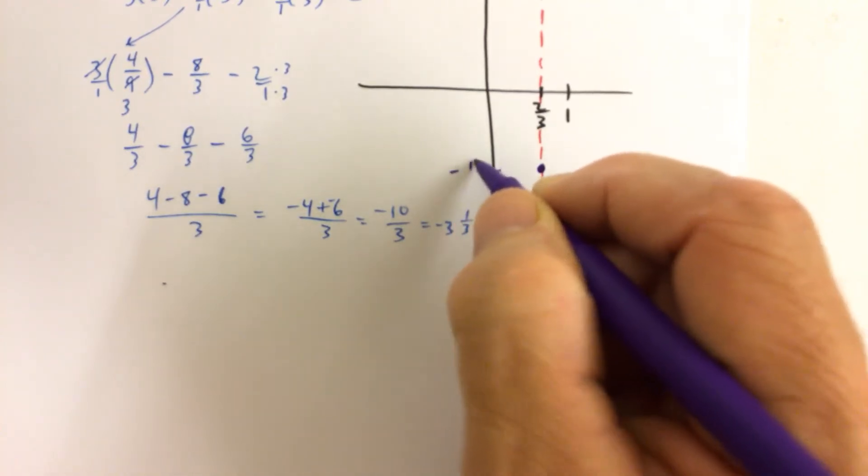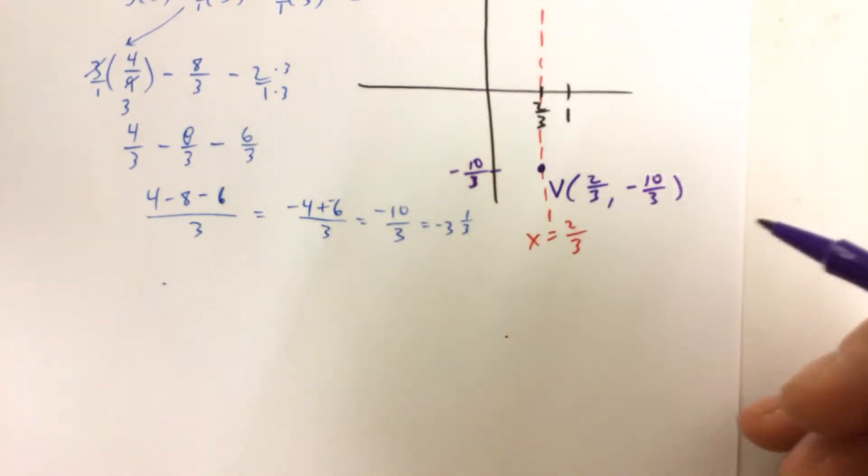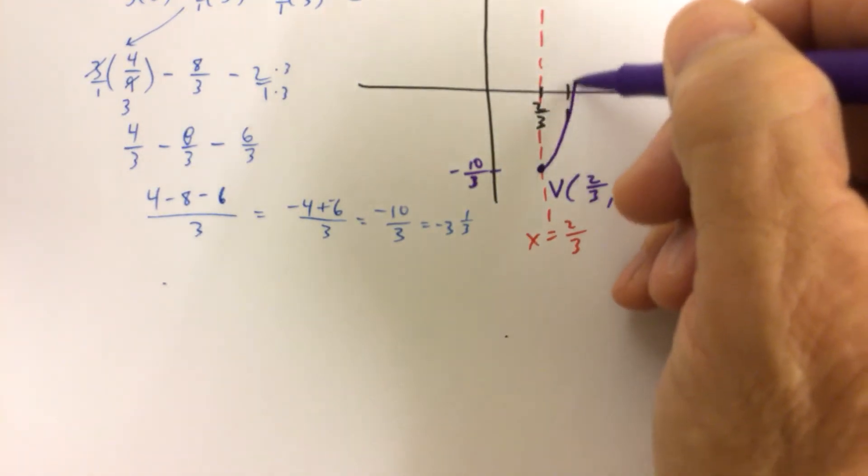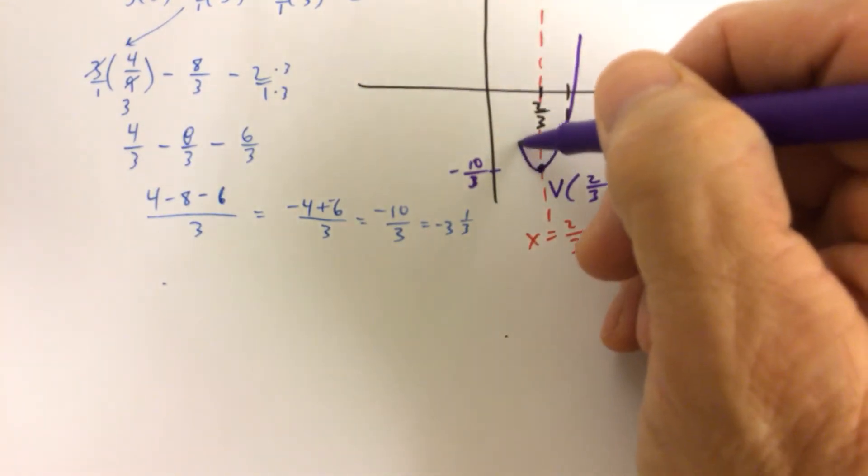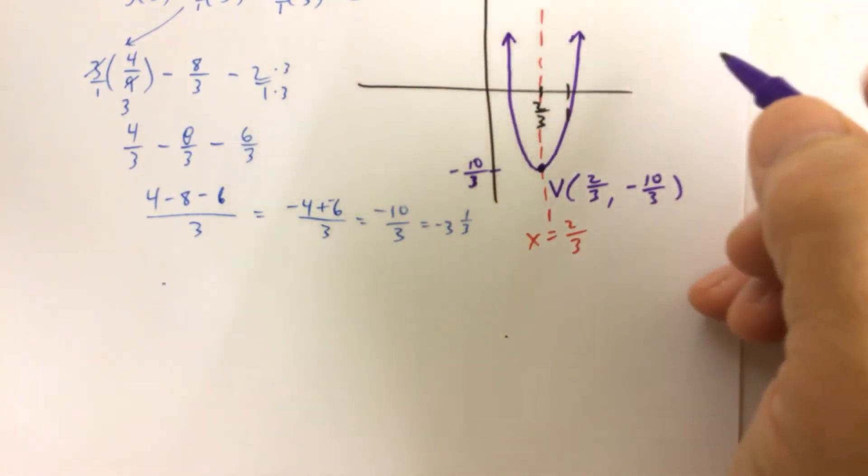So you can just call that negative 10 thirds. You don't even need to really worry about where it is. It's just down there somewhere. But it is negative 3 and 1 third if you want to be precise. And then the parabola is going to open up, and it's going to be a little bit more narrow than normal because of the 3. The a being 3.